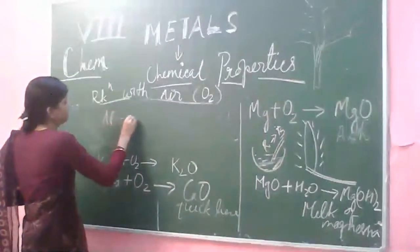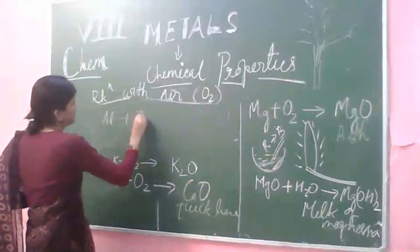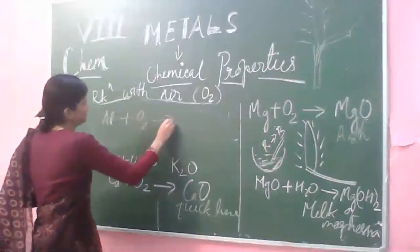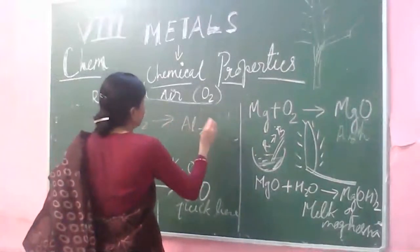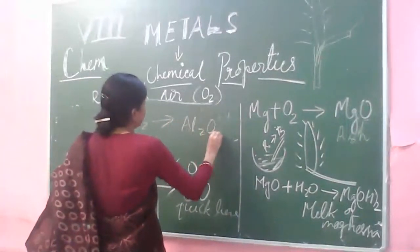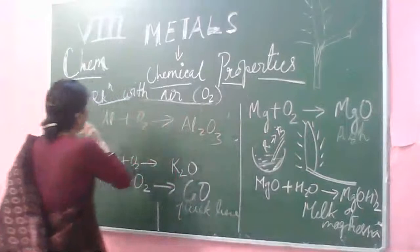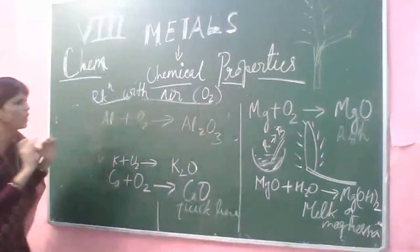Aluminium plus oxygen gives aluminium oxide. Aluminium is a moderately reactive metal.